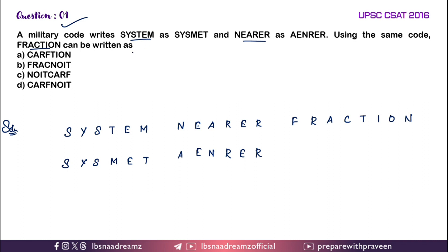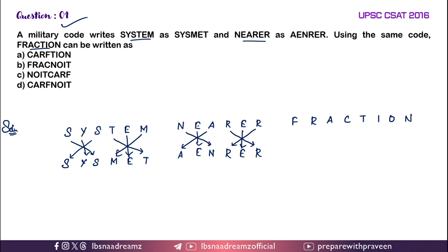System is given the code SYSMED. They have given the code like this. Similarly, A is given here and N has gone here. E remains in the same position, R and E — okay. Using the same code, you have to write the code for FRACTION. So let us follow these steps.